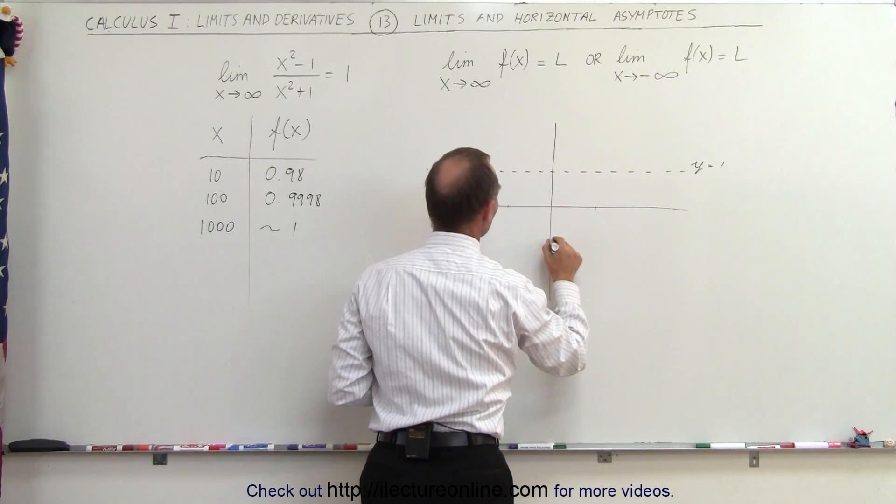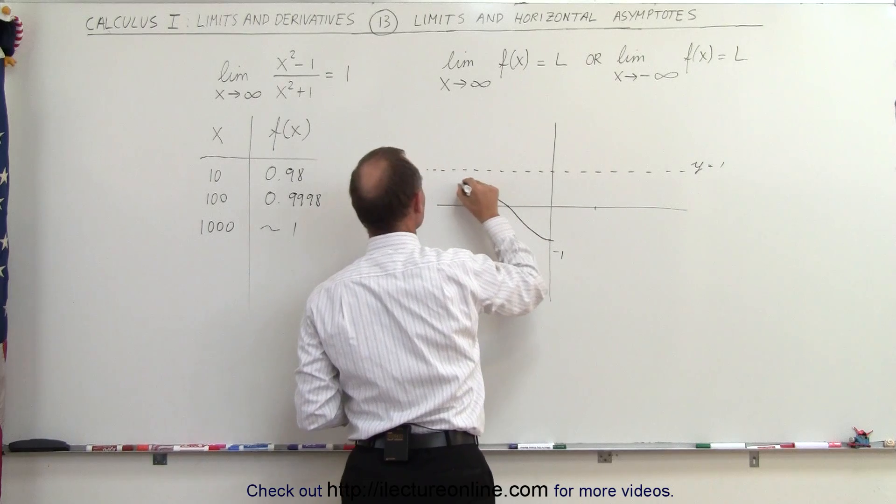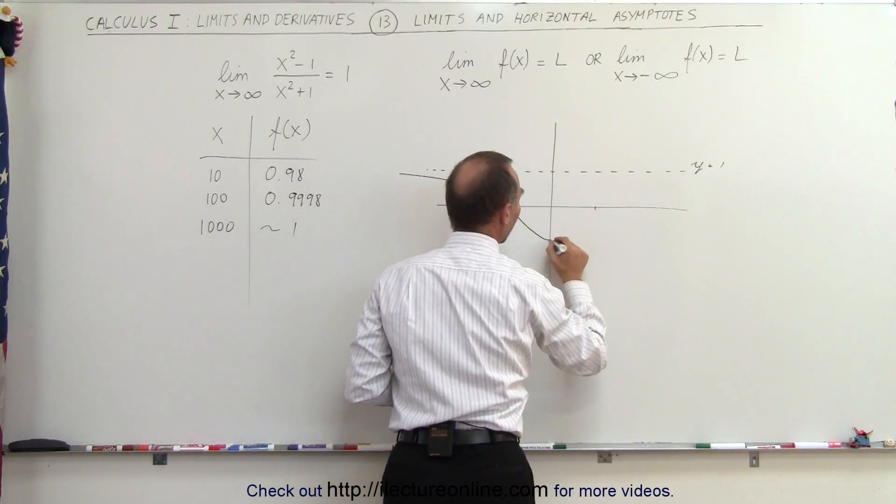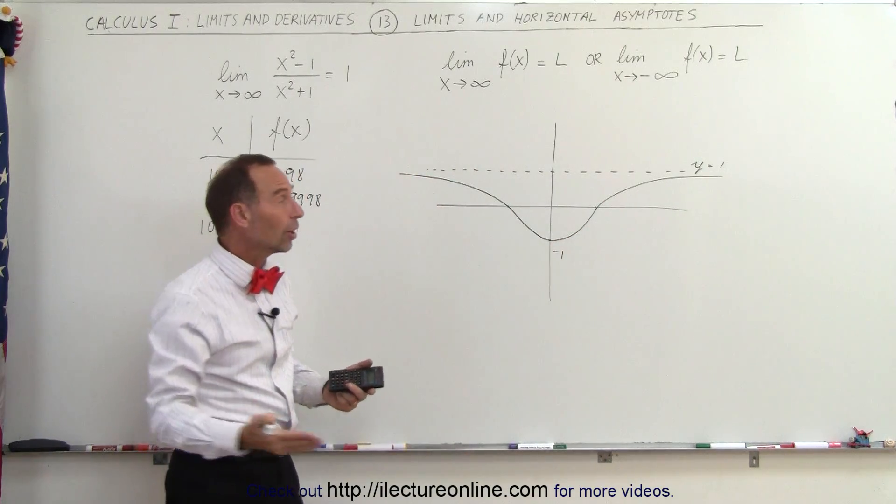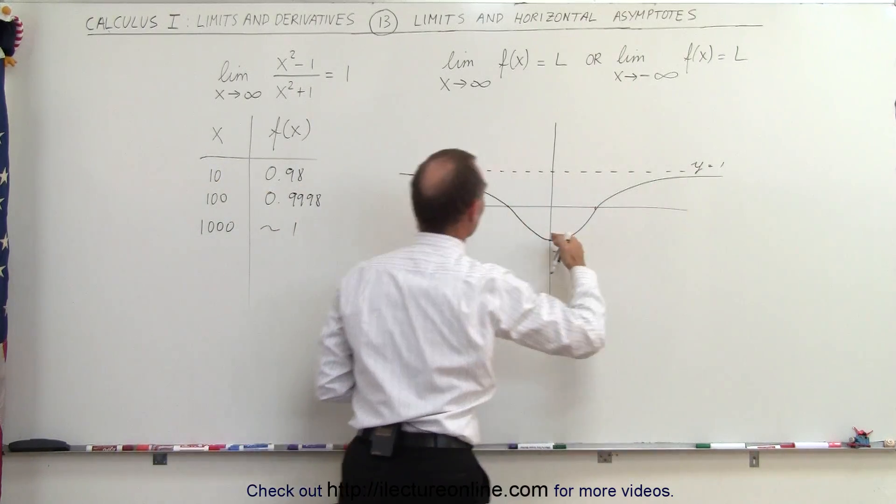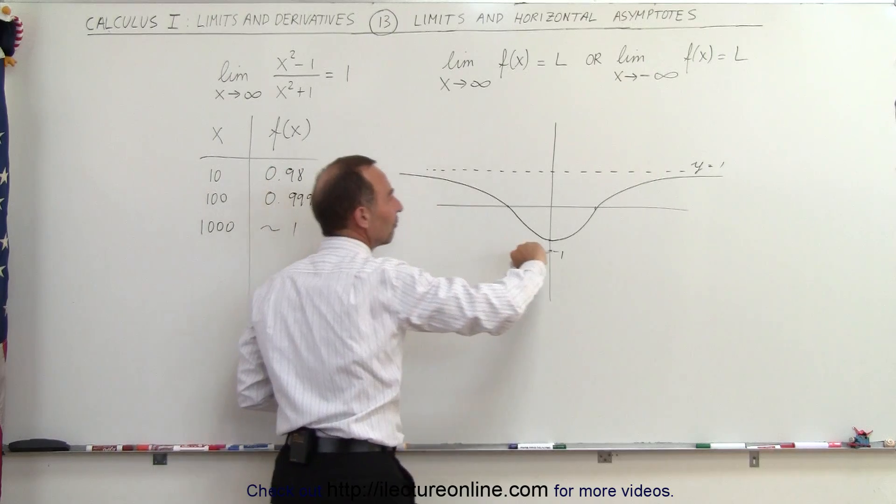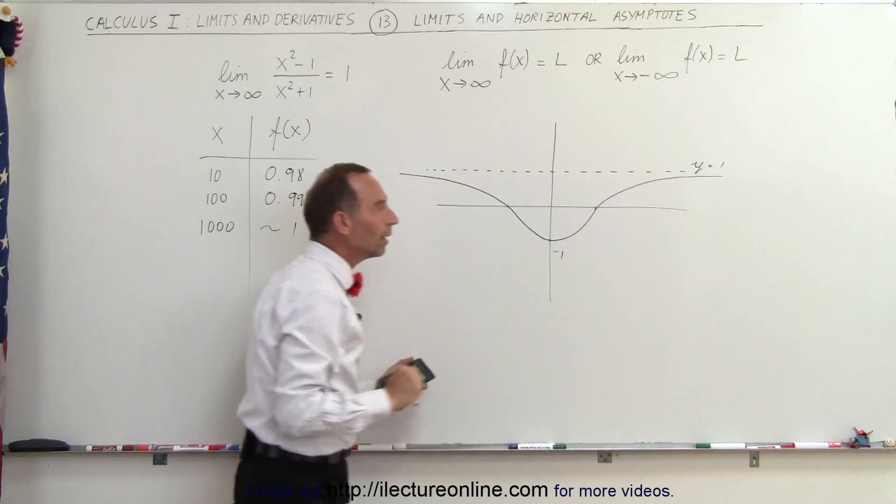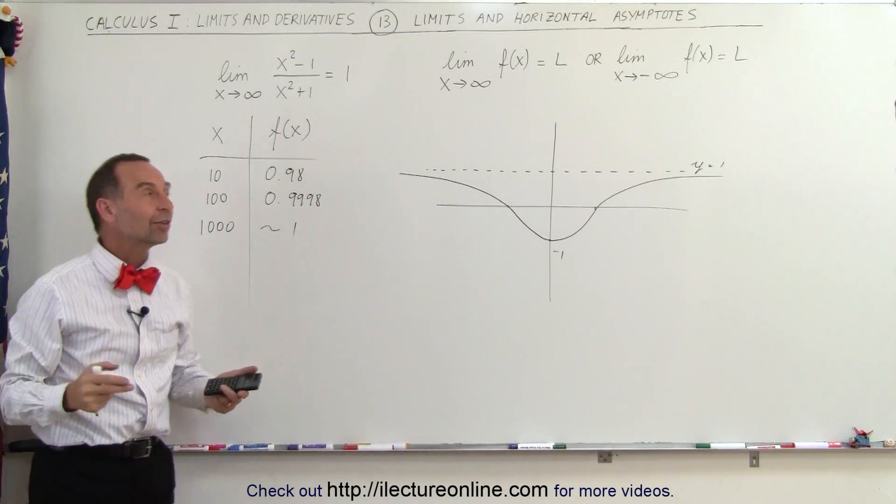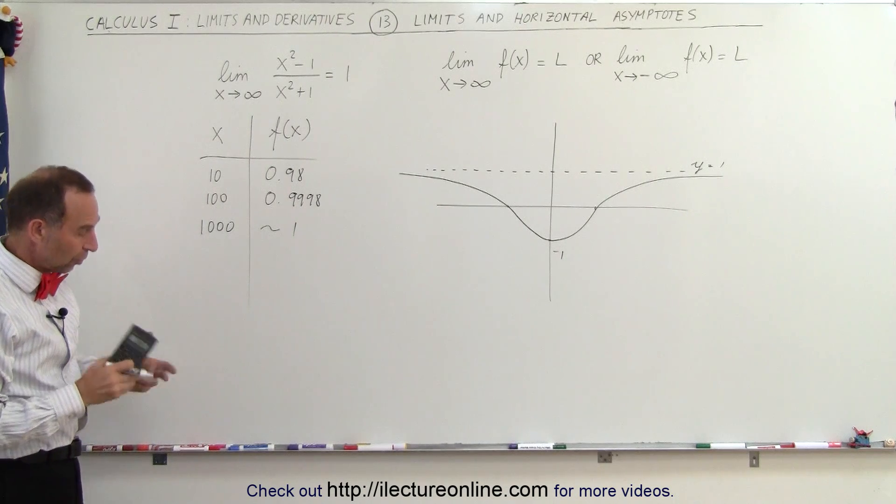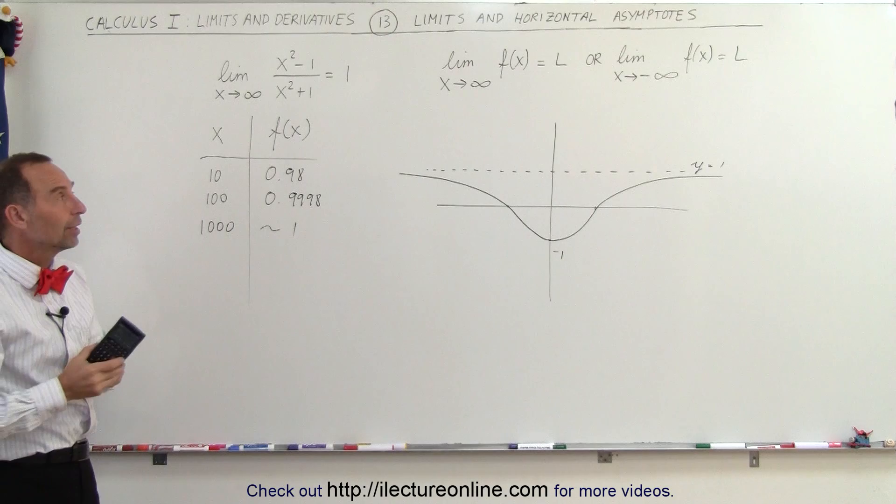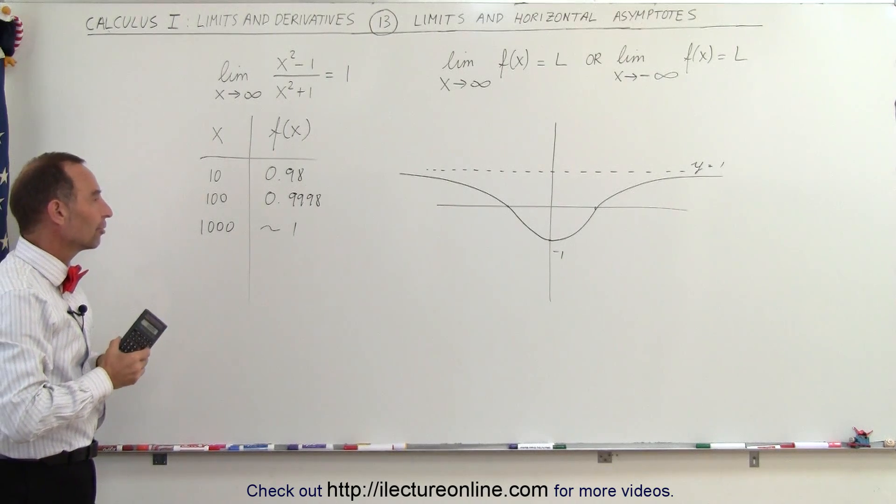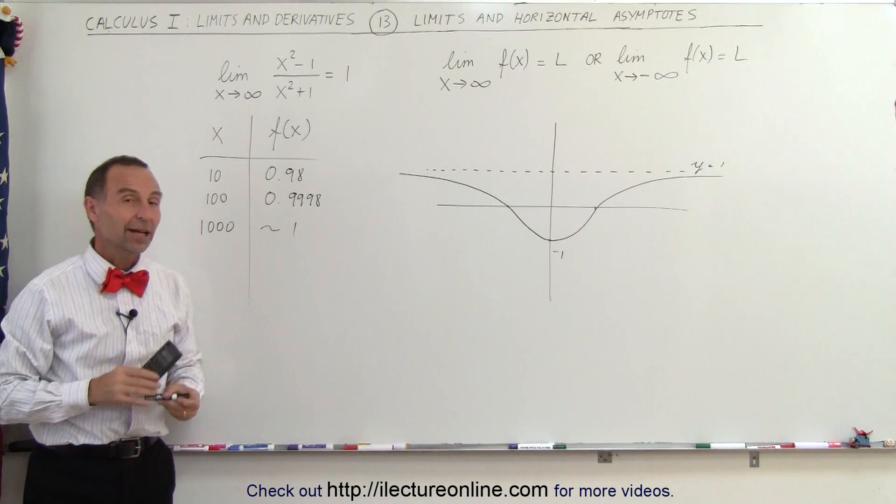So you can see that the function looks kind of like this, one side, and like this on the other side. Notice, as x becomes very large in the positive direction or very large in the negative direction, the function approaches y equals 1. And so therefore, we have these horizontal asymptotes. So that usually happens in terms of x becoming very large or a negative very large number. And that's how it's done.